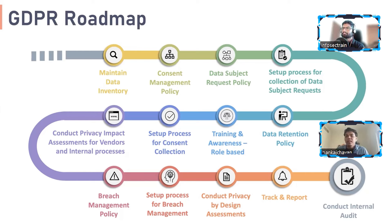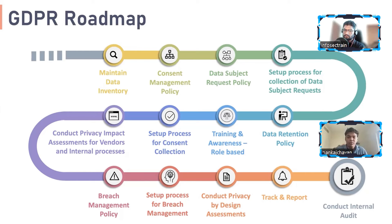For example, if someone revokes consent on marketing emails, I need to know internally which departments — say marketing and sales — hold that person's data. I inform both to remove it, then confirm to the data subject that within seven days they won't receive that communication. I built this DSR process from the ground up in one organization and it worked well because we had a comprehensive records of processing activity underpinning it.